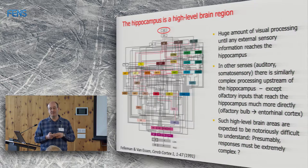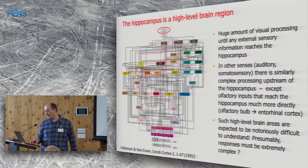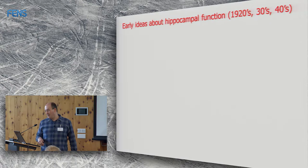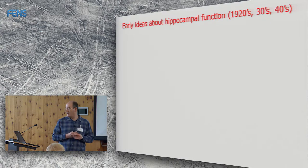The one interesting exception is olfactory input — there are direct projections from the olfactory bulb to the entorhinal cortex, which is very unusual. This was the main reason why in the 1920s there was an olfactory theory of the hippocampal formation. Although the hippocampus receives enormously complex multi-sensory input, the surprising finding is that neurons still show rather simple-looking representations for space and directions. This is quite surprising given the huge amount of preceding processing.